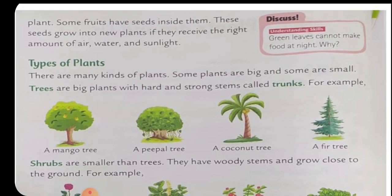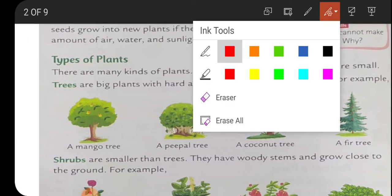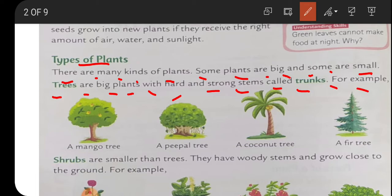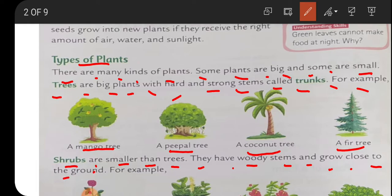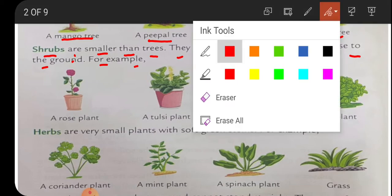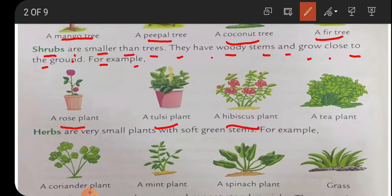There are many kinds of plants. Some plants are big and some are small. Trees are big plants with hard and strong stems called trunks - for example, a mango tree, a peepal tree, a coconut tree, and a fir tree. Shrubs are smaller than trees; they have woody stems and grow close to the ground. For example, rose plant, tulsi plant, hibiscus plant, and the tea plant.